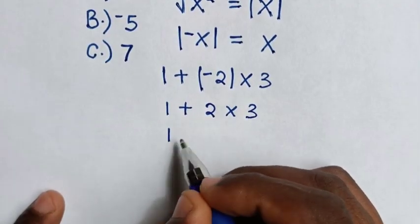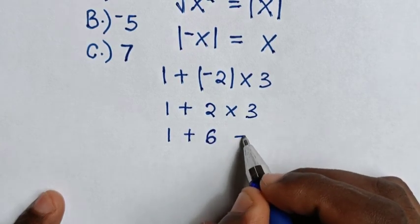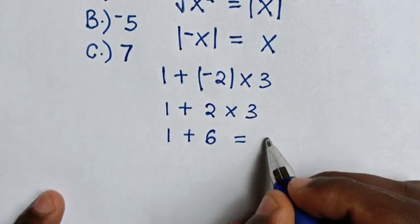In the next step, it will be 1 plus 2 times 3 is 6. Then, it will be equal to 1 plus 6 is 7.